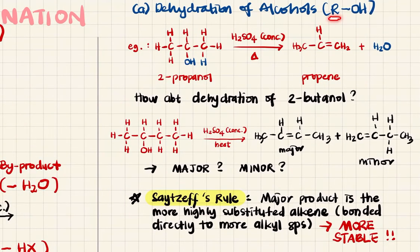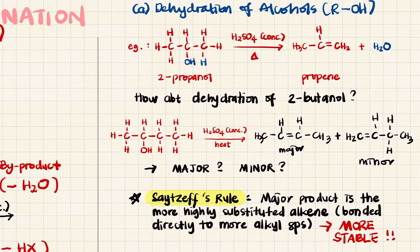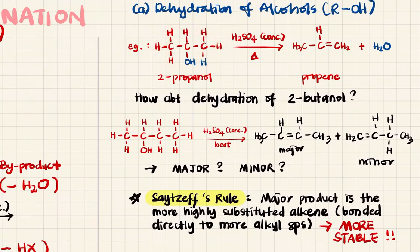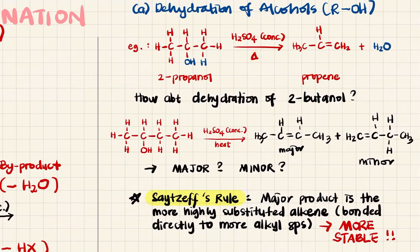Let's look deeper into the dehydration of alcohol. An alcohol has an OH functional group. For example, if you have 2-propanol and want to remove OH and H, we locate the OH group and the adjacent hydrogens. If we remove this hydrogen and OH in the presence of concentrated sulfuric acid while heated, we will get a carbon-carbon double bond between these two carbons.